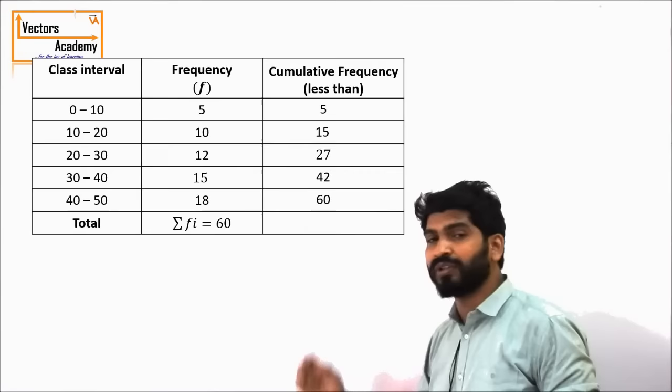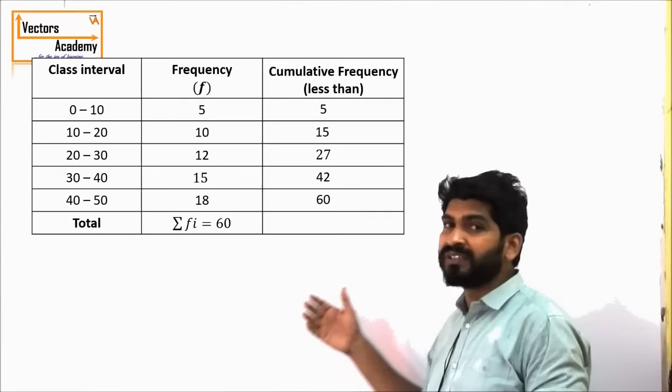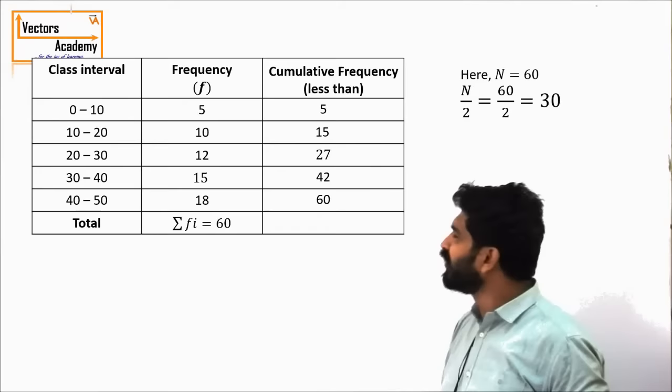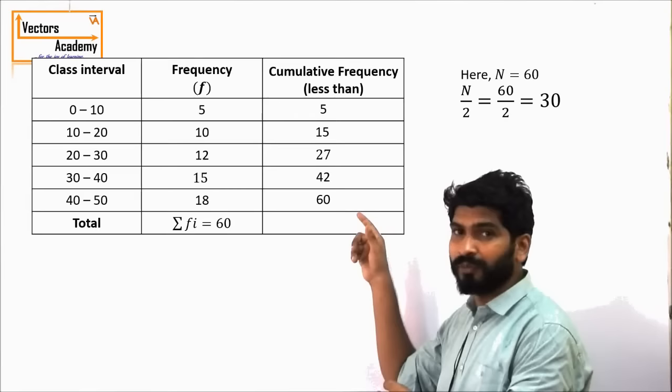The median is the centermost value. The number of students is 60, so the centermost value will lie at n/2 — the total number of students divided by 2 — that is the 30th value. So the value of n/2 is 30. What we have to do is look at the cumulative frequency column and find out where the cumulative frequency first crosses 30.